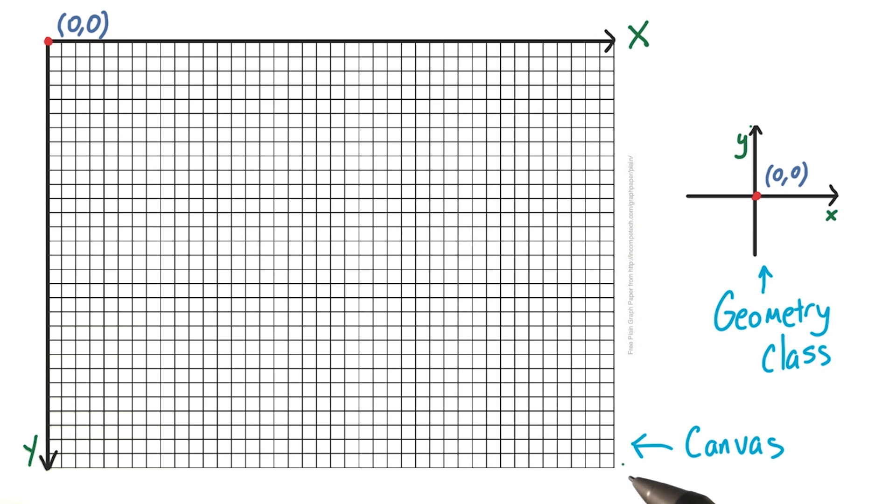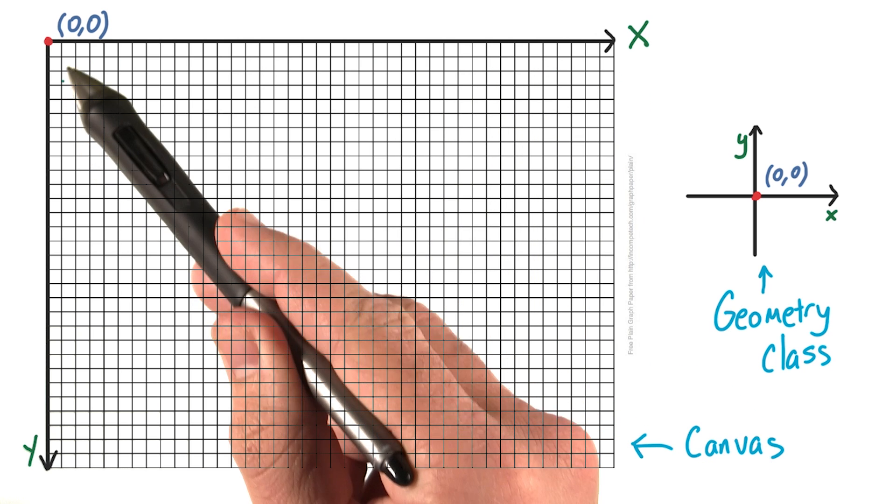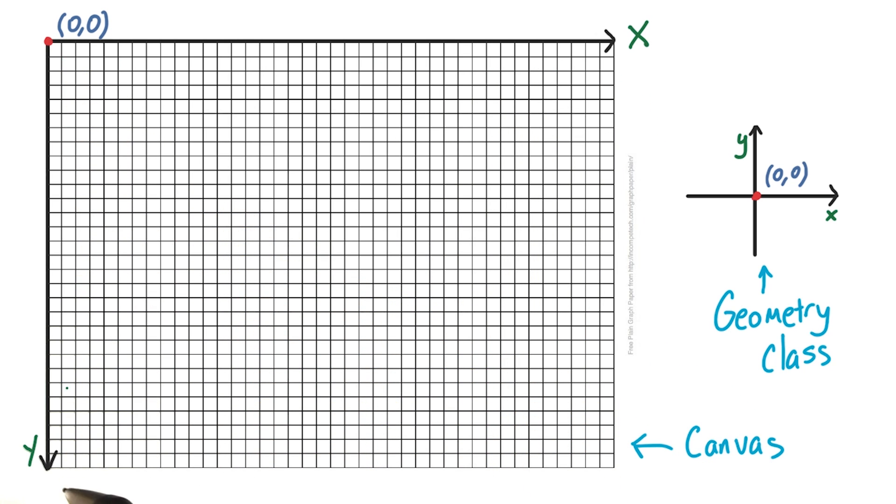The canvas's coordinate system is a little bit different. Here, 0,0 is in the top left, and our x numbers just get bigger as you go to the right, and our y numbers get bigger as you go down. This is different than geometry class, where numbers got more positive as you go up. So there are opposites in a way. Keep that in mind.